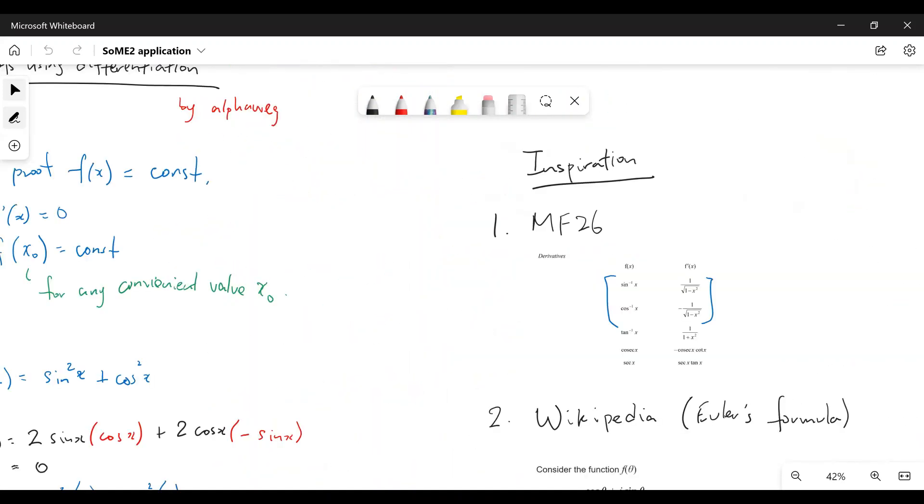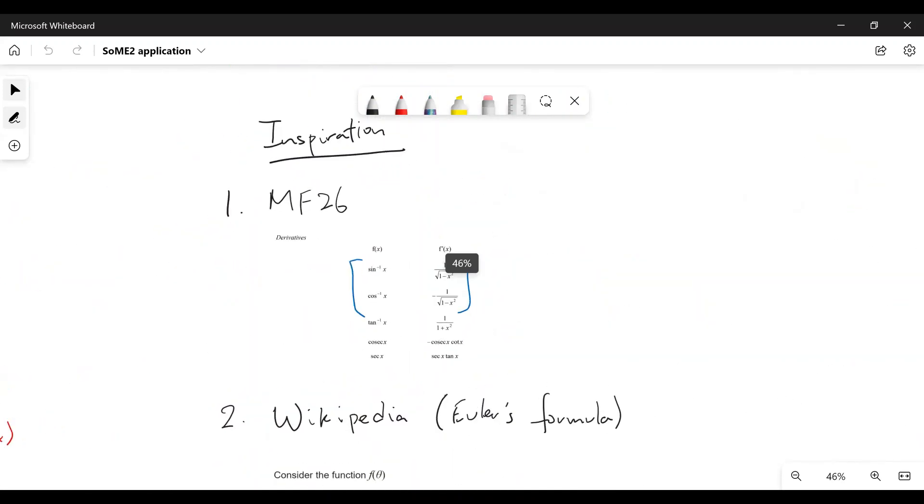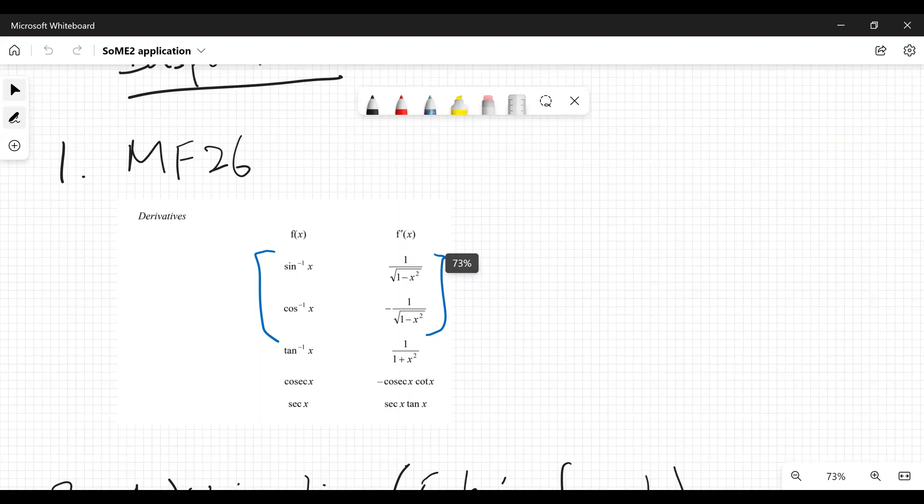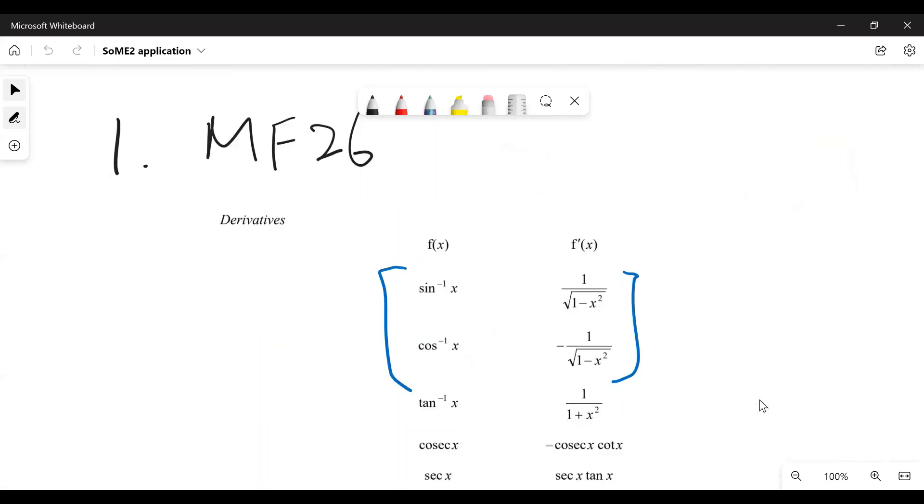Okay, so what's the inspiration for all this? The first thing was the MF26, which was my JC formula sheet. Yes, so you look at this table over here, especially the sine inverse and cosine inverse derivatives.